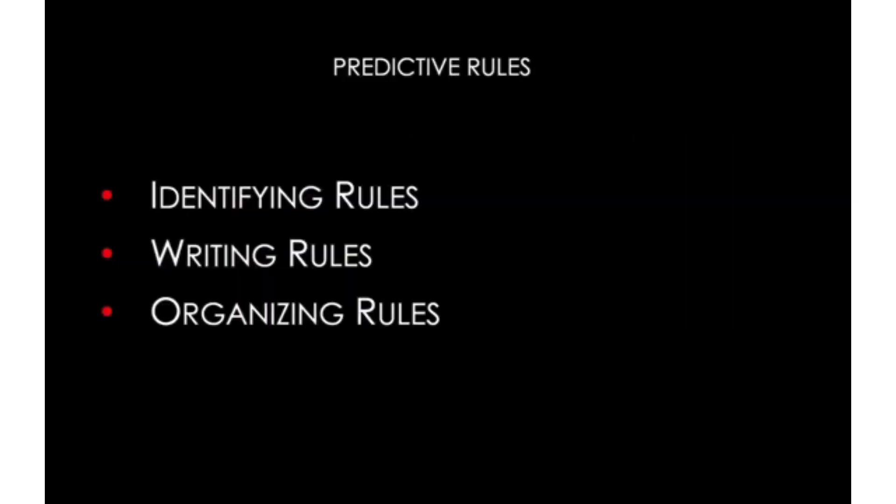At the beginning of the presentation, I mentioned we'd focus on two important aspects of creating effective rule statements. The first category we'll discuss is predictive rule statements. By now, you all have had some experience with these — think of the memos that you wrote or are currently writing. These rules are all about predicting a specific answer or a likely outcome to a legal issue. I'll touch upon how to identify rules, how to write rules, and how to organize your rules.